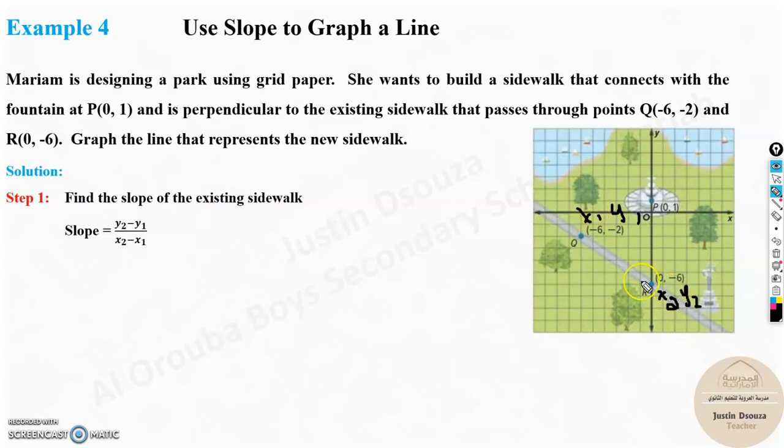Even if you interchange this, say for example, I take this as x1, y1, this as x2, y2, you will get the same answer. But over here, generally the first point is Q. So x1, y1, this is x2, y2. So y2 is minus 6, minus minus 2. And over here, x2 is 0, minus negative 6. Put it in the calculator, you will get the answer minus 2 by 3.